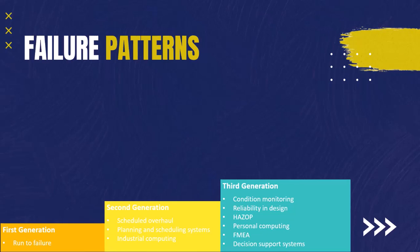In the first generation of maintenance, people believed that the hazard stays constant during the life of the asset until its last phase, which is the aging phase or the wear and tear phase, where the failure rate starts to increase. This pattern is called the wear out pattern.